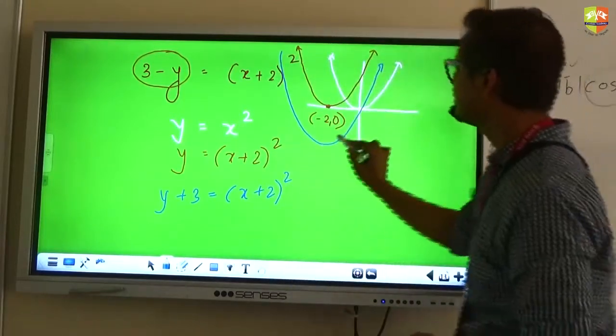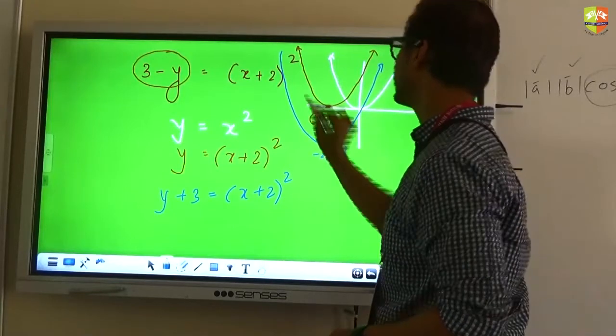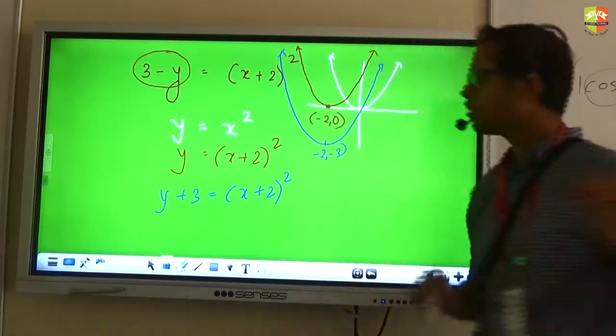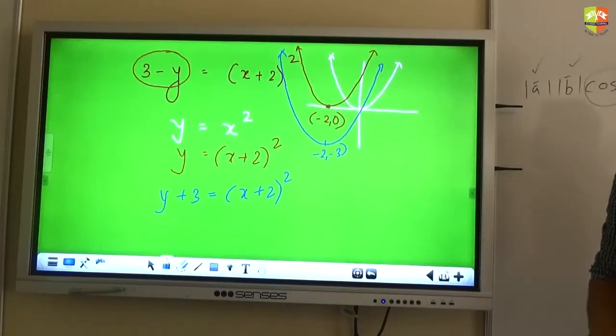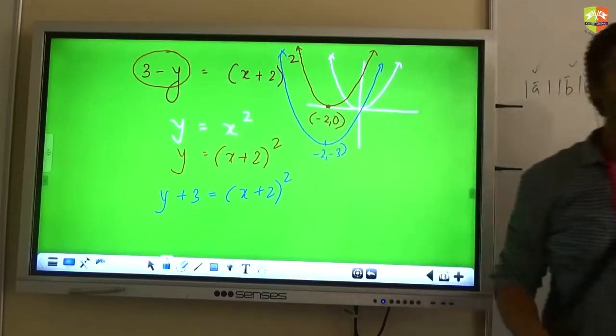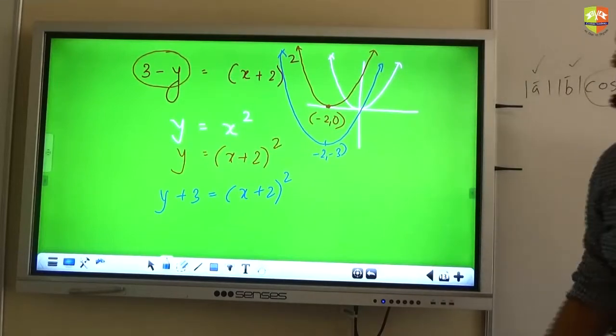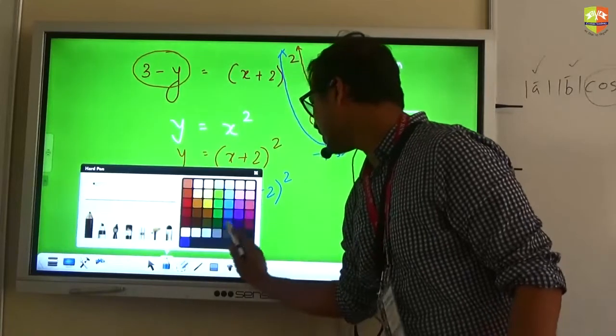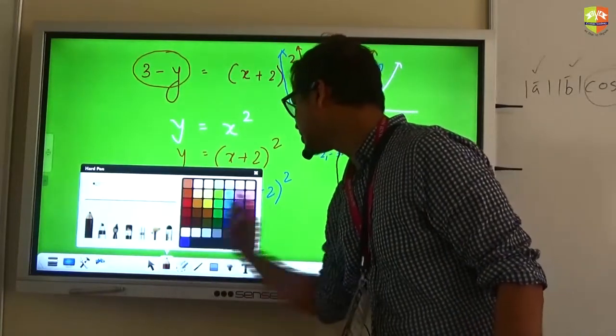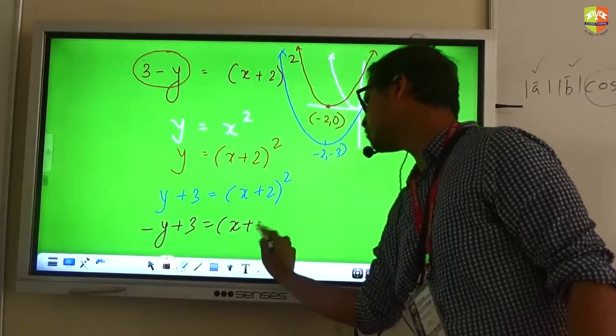It may seem to pass through origin but it is not. So this point will be minus 2 comma minus 3. Next what do you want to do Krishna? You wanted a minus y to come over here means you are replacing your y with minus y.